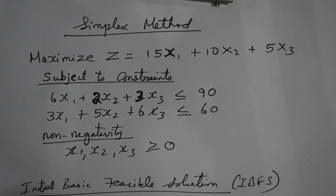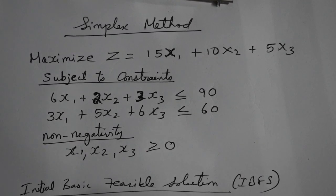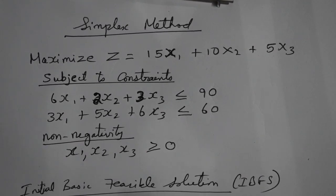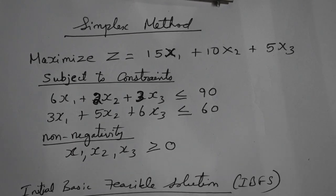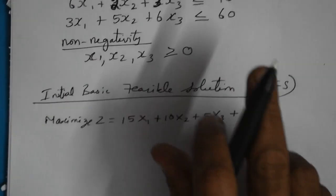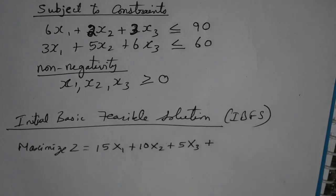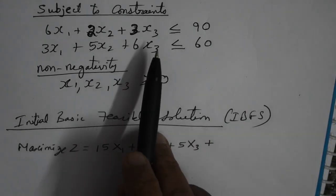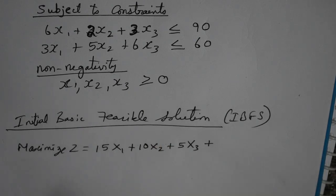The problem originally has three variables: x1, x2, and x3 — these are referred to as the Basic Variables. In the simplex method, along with the basic variables, we will be adding a few more variables. The variables we add to solve the problem are called Non-Basic Variables. There are several types, but in this problem we will see only one type; I will teach you the others later.